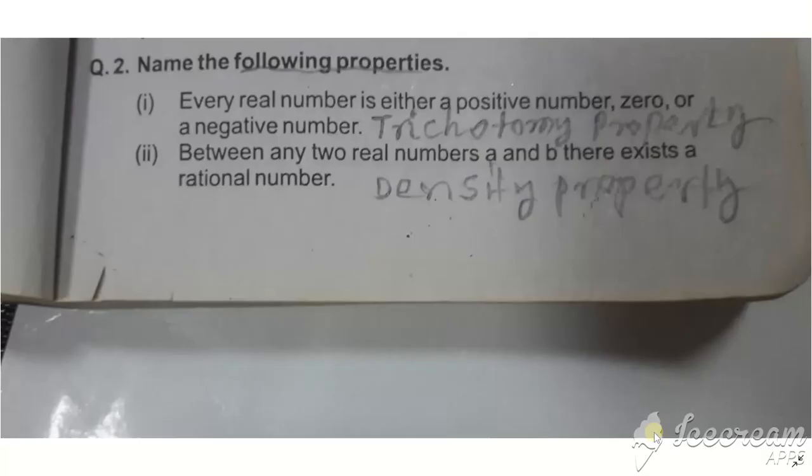Question 2: Name the following properties. Part i: Every real number is either positive, zero, or negative. This is the trichotomy property.